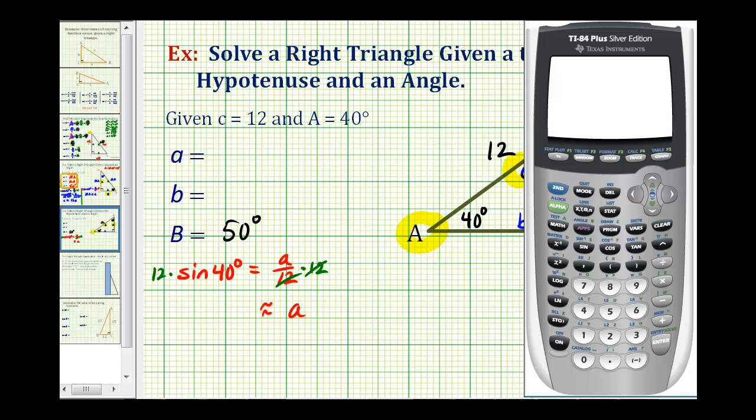One of the most important things we need to do is make sure our calculator is in degree mode. I'm going to press the mode key. Notice degree is highlighted, so we are in degree mode. Now from the home screen, we'll approximate this product: 12 times sine 40 degrees. To the nearest tenth, this would be approximately 7.7 units for the length of side A.